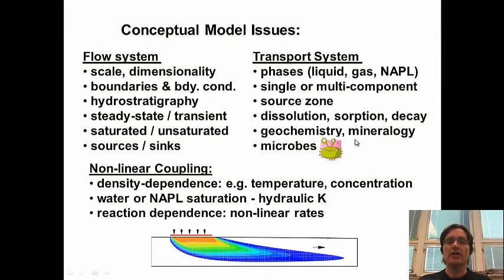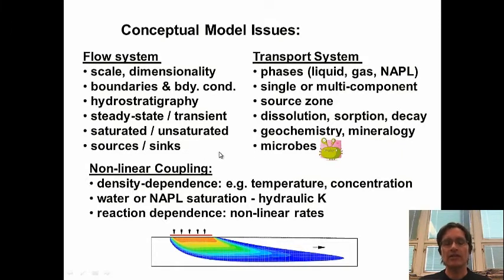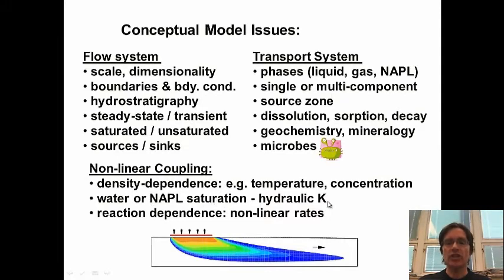Which processes do we need to include — dissolution of a non-aqueous phase, adsorption and decay? Do we need to include the geochemistry, the background interactions with solid mineralogy and microbes if we're looking at biodegradation? We should include the microbial population. Between flow and transport, we need to look at the coupling — there are various methods and methodologies. If we're looking at density dependence, where the flow system depends on temperature or concentrations, we need to include a fully coupled system. These are all questions we need to address in developing a conceptual model.